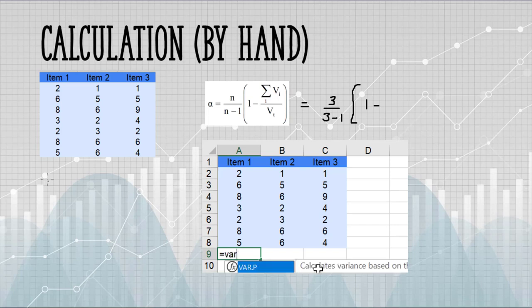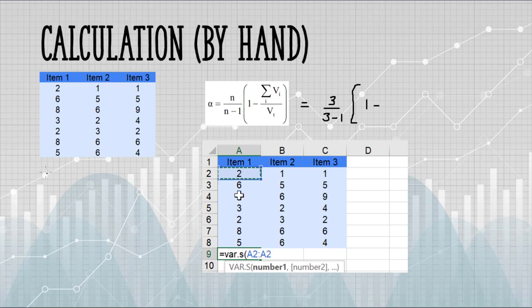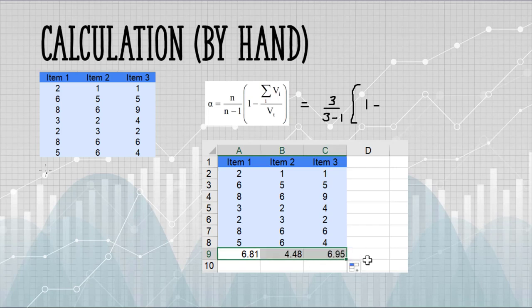Equals var.s. Open parenthesis. I'm going to click on the first cell in my column, followed by a colon, and then I'm going to click on the last cell. When I close my parentheses, there's my sample variance for that first group. If you drag the little square all the way across the row, it will fill in the rest of the variances.